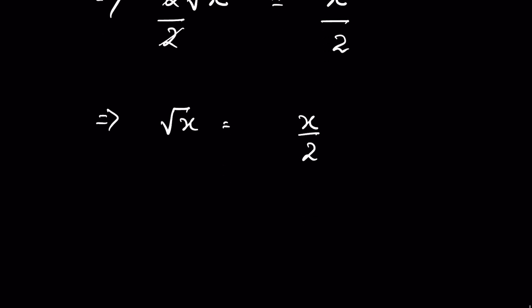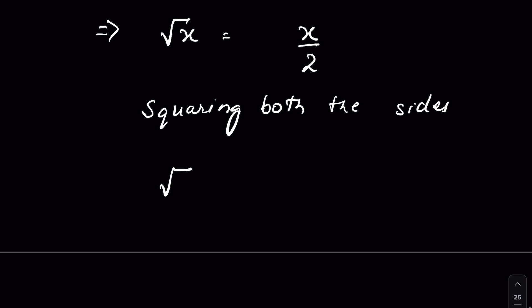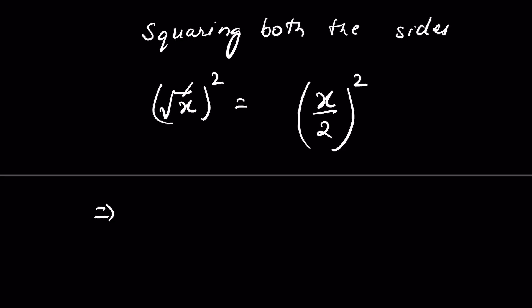To remove the square root, let's square both sides. Squaring both sides gives us square root of x whole squared equals x over 2 whole squared. The square root gets removed with the square.